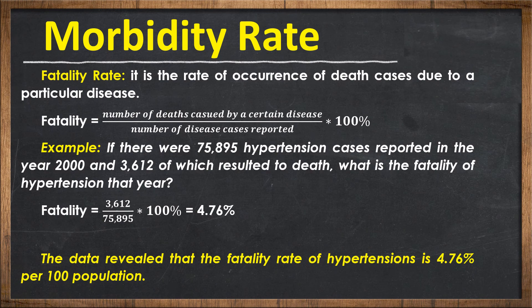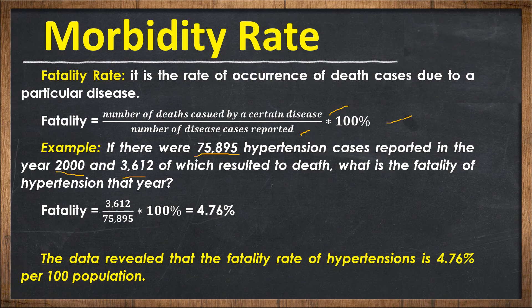Fatality rate is the rate of occurrence of death cases due to a particular disease. The formula is: number of deaths caused by a certain disease divided by number of disease cases reported, multiplied by 100%. For example, if there were 75,895 hypertension cases in year 2000 and 3,612 resulted in death, then 3,612 divided by 75,895 times 100% equals 4.76%. The fatality rate of hypertension is 4.76% per 100 populations.